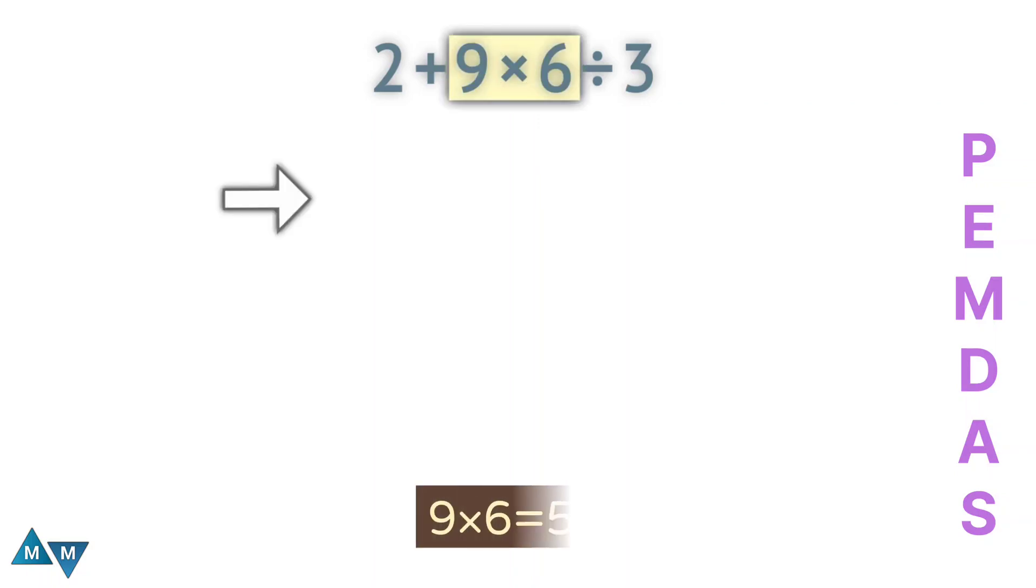So 9 times 6 will be our first move, which equals 54. Now we have the following expression.